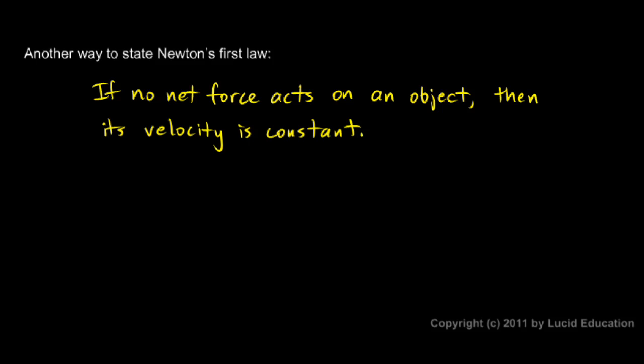That short statement essentially sums up everything in the other statement as well. And when we say its velocity is constant, that means the velocity doesn't change. So if it's moving, it continues moving at the same speed and in the same direction because velocity has direction. Remember velocity is a vector, it's a directional quantity.